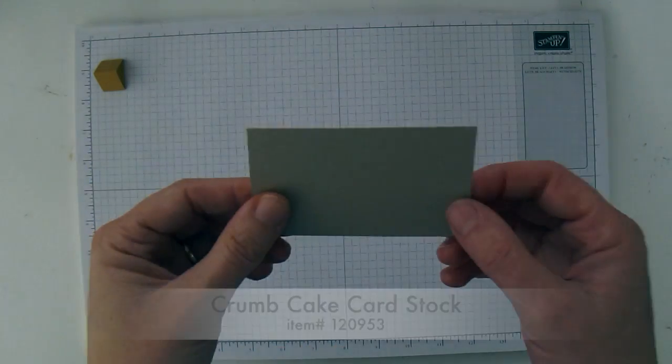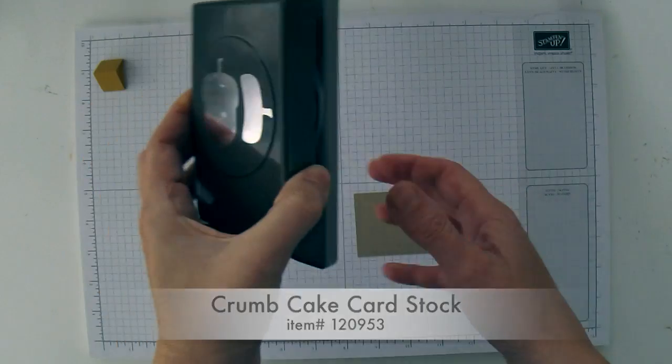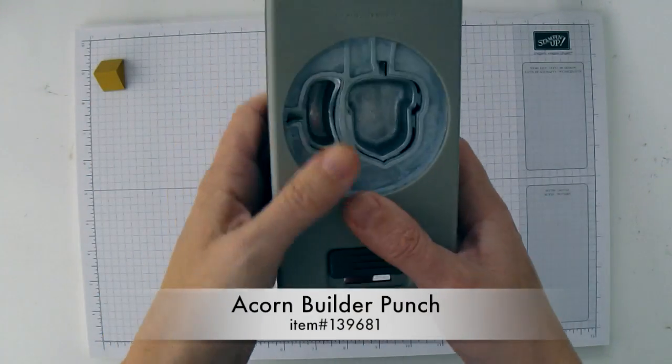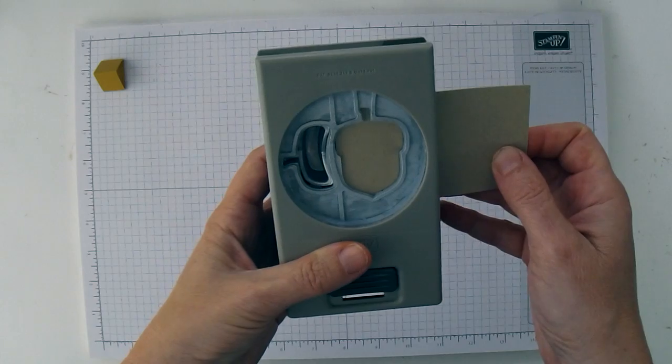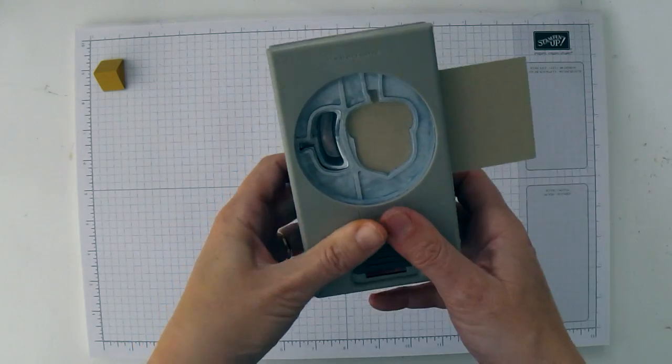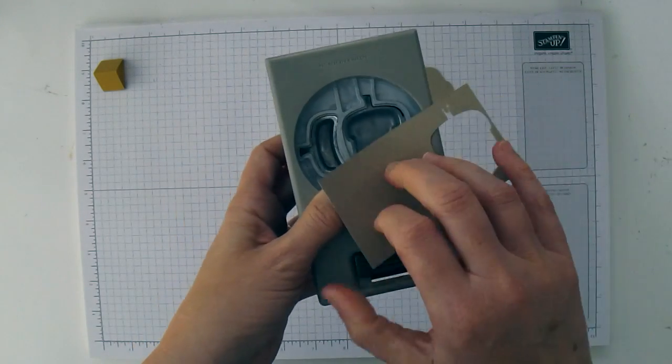Then you're going to take a piece of Crumb Cake cardstock and the Acorn Builder Punch. And I'm just going to punch out two of the big full acorns out of this piece of cardstock.